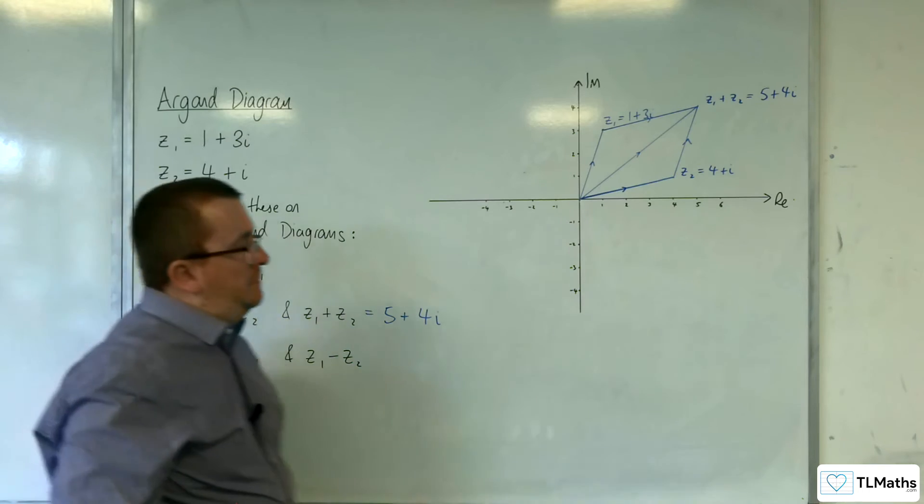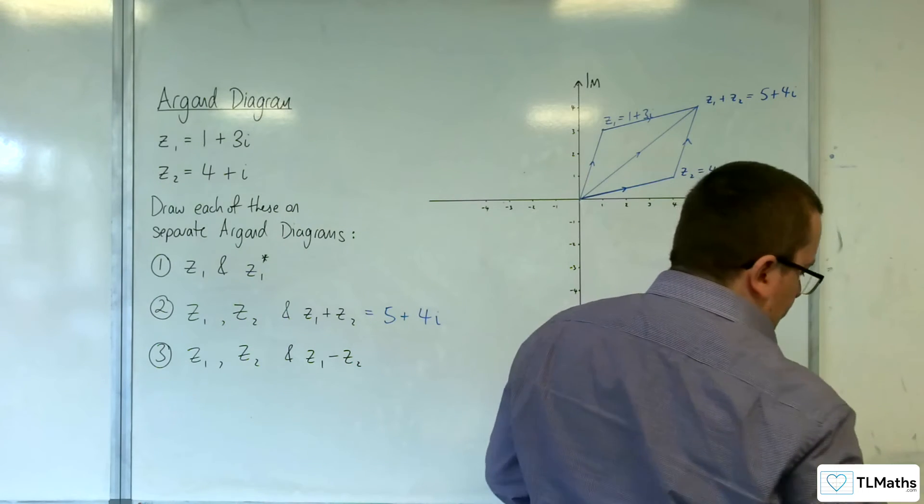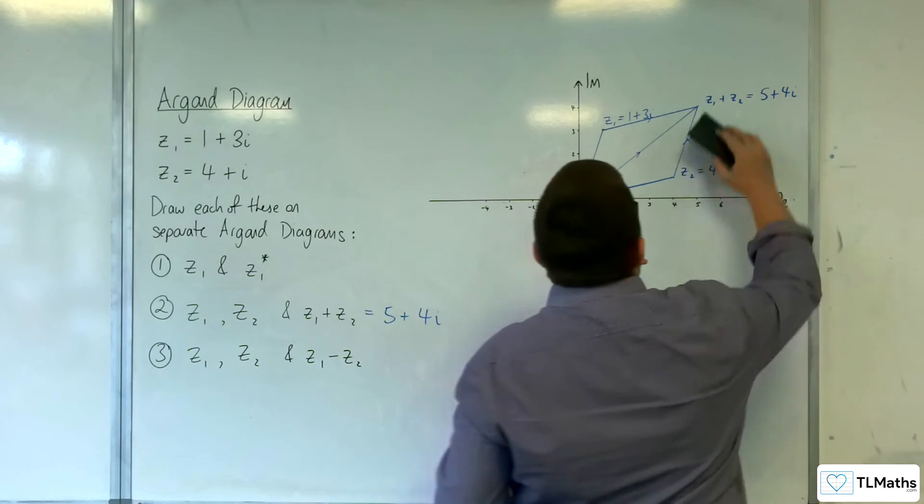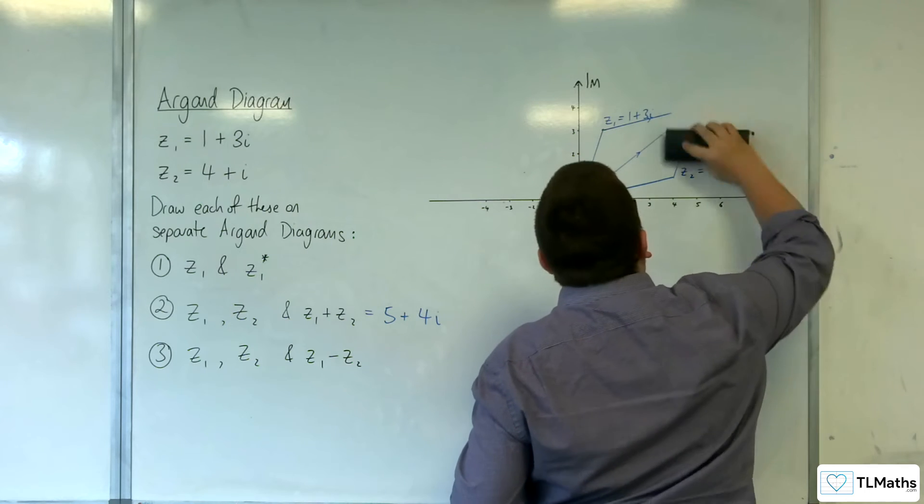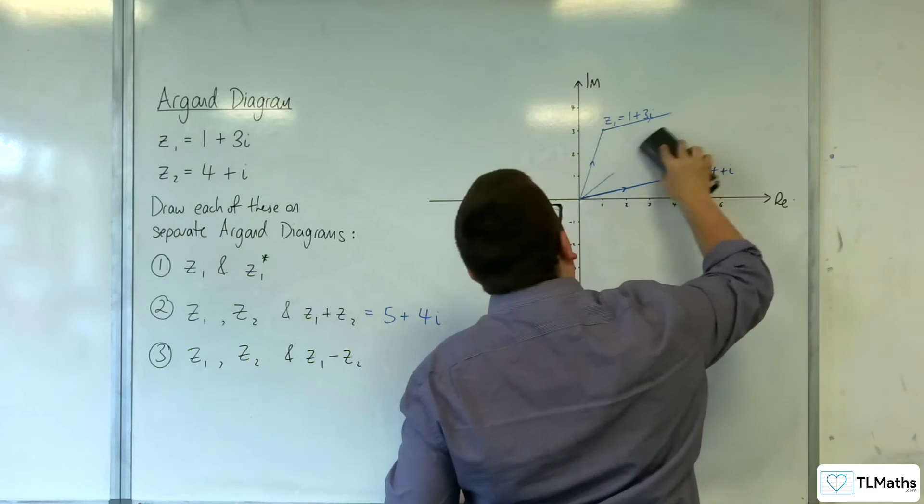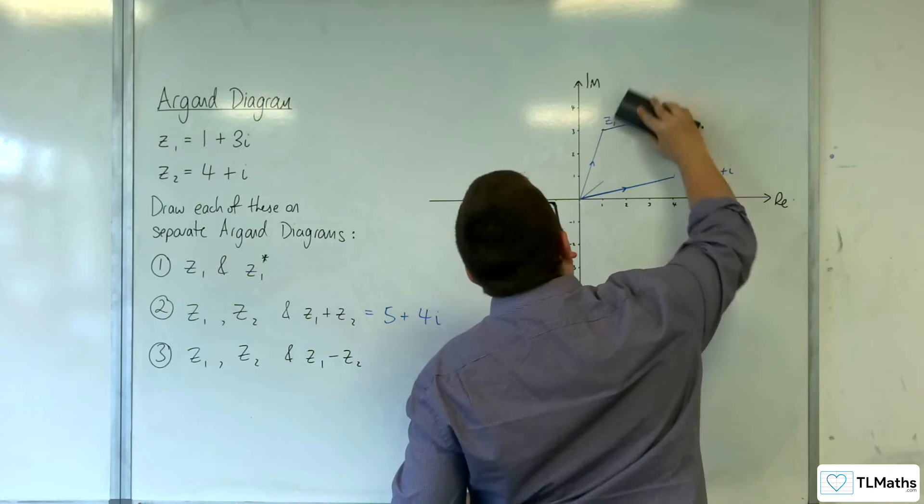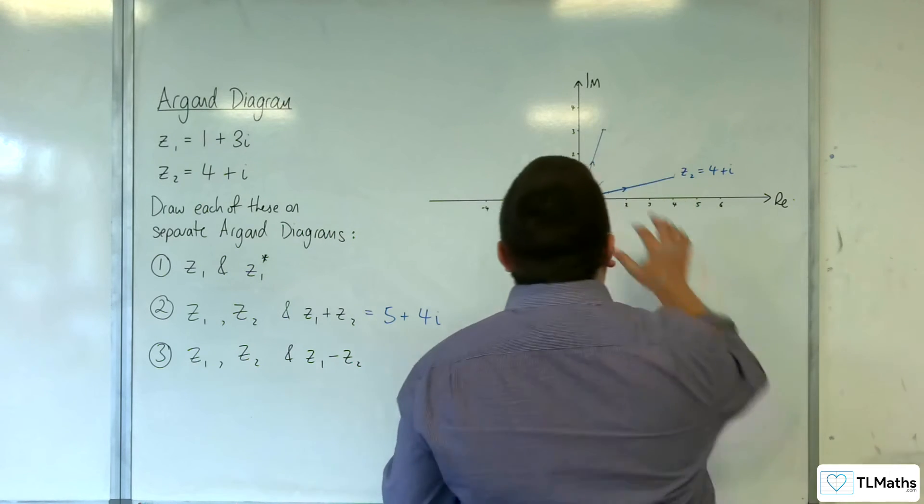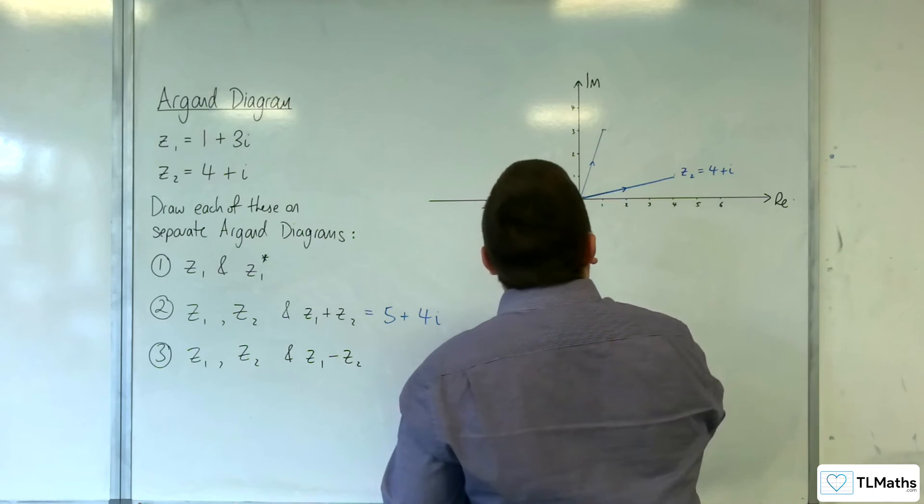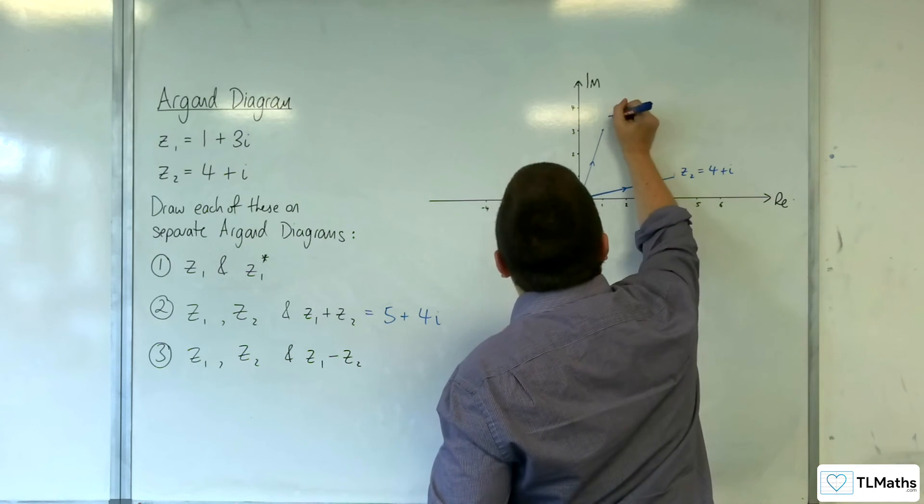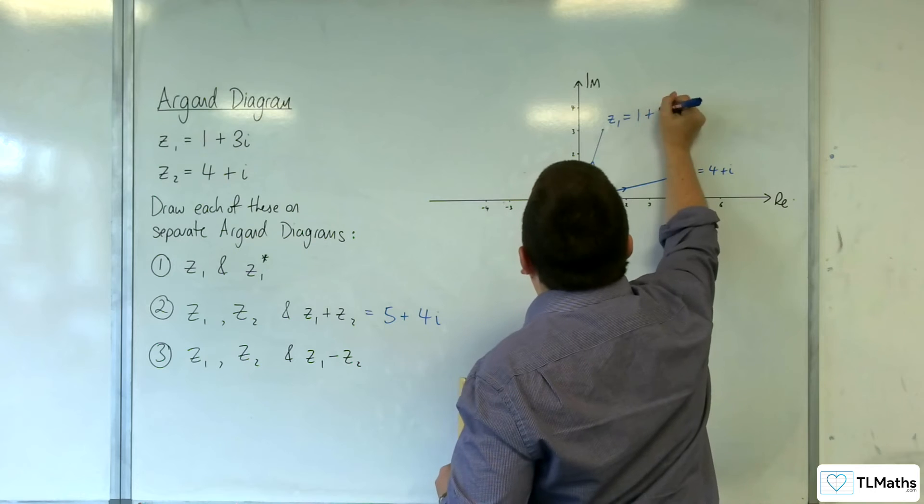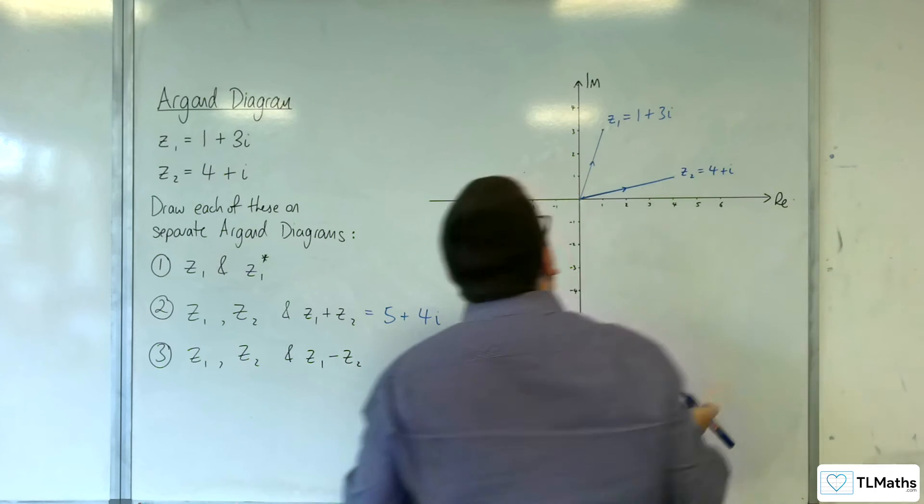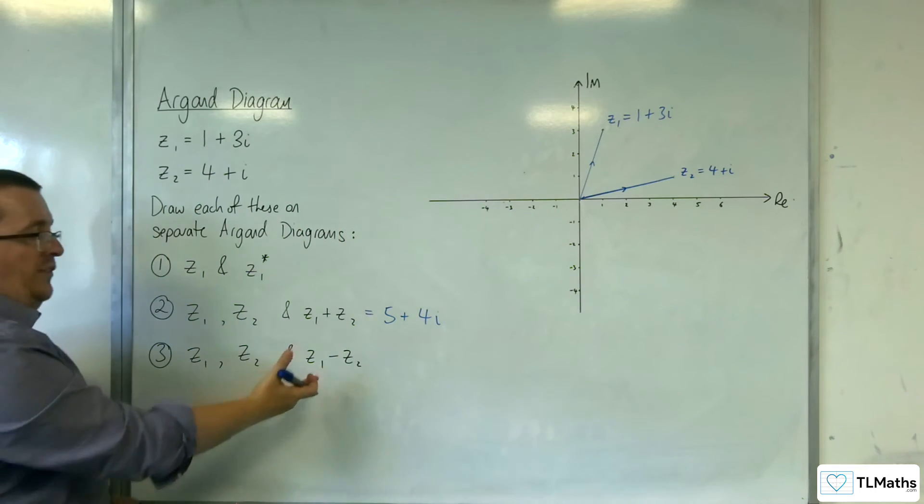So, let's just erase the bits I don't need. So, I'll have to rewrite that one. I need that. That's Z1. Z1. So, Z1 take away Z2, the difference.